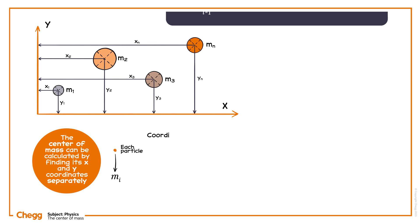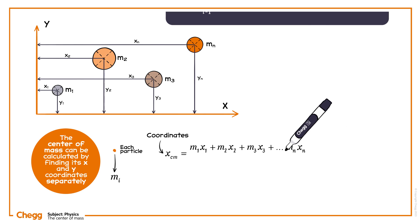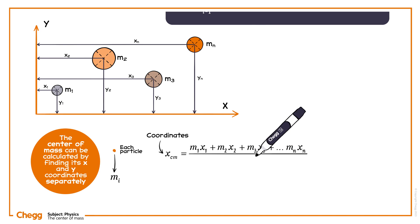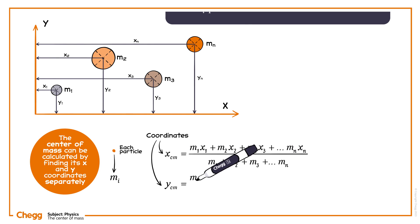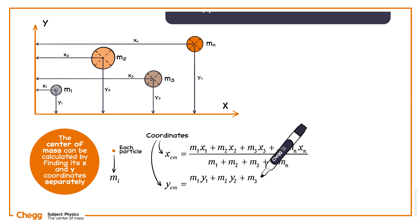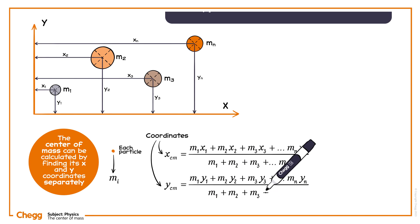The x and y coordinates of the centre of mass of the system are: x_cm equals m1·x1 plus m2·x2 plus m3·x3, continuing to mn·xn, divided by m1 plus m2 plus m3, continuing to mn. And y_cm equals m1·y1 plus m2·y2 plus m3·y3, continuing to mn·yn, divided by m1 plus m2 plus m3, continuing to mn.